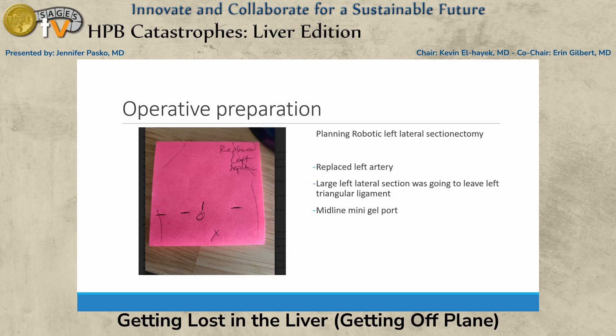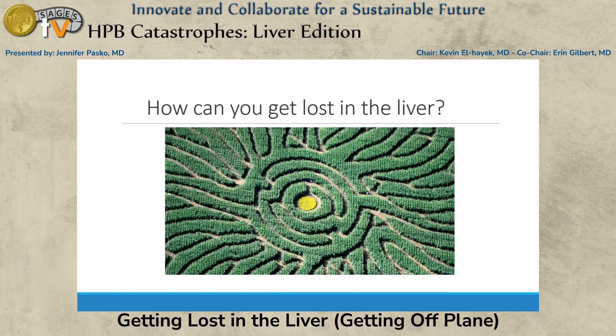This patient had a left replaced hepatic artery. What you may not notice from the scan is she has a giant left lateral section — like a beaver tail liver. I had decided to do a mini gel port just to get the specimen out easier. But how do you get lost in the liver? We'll come back to that case.